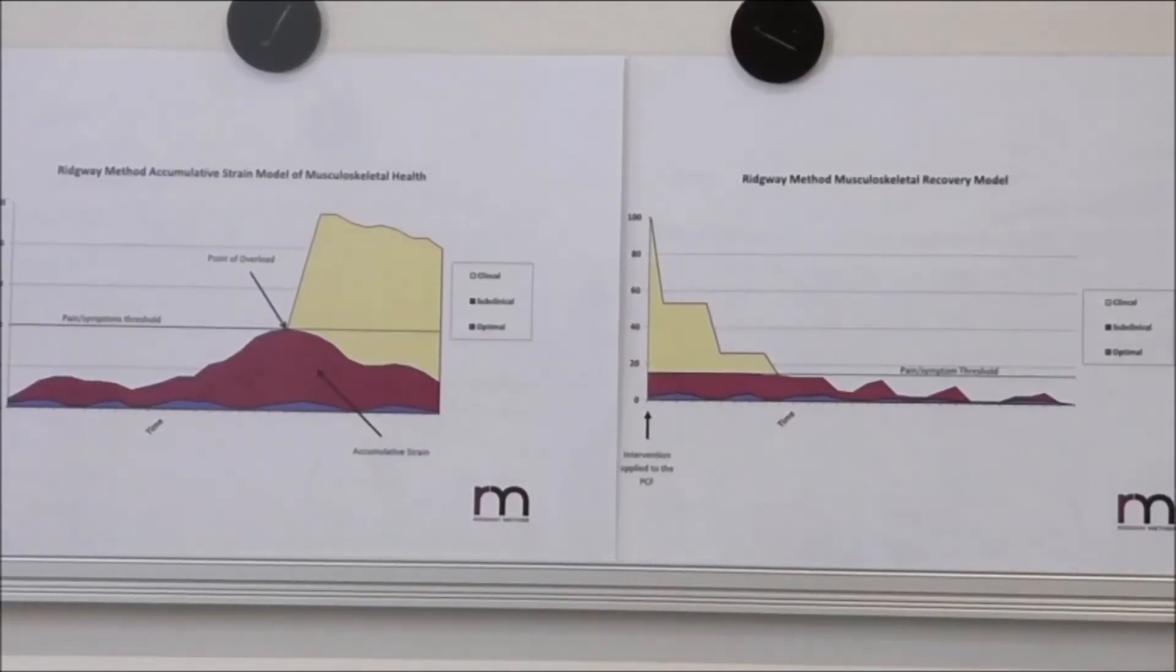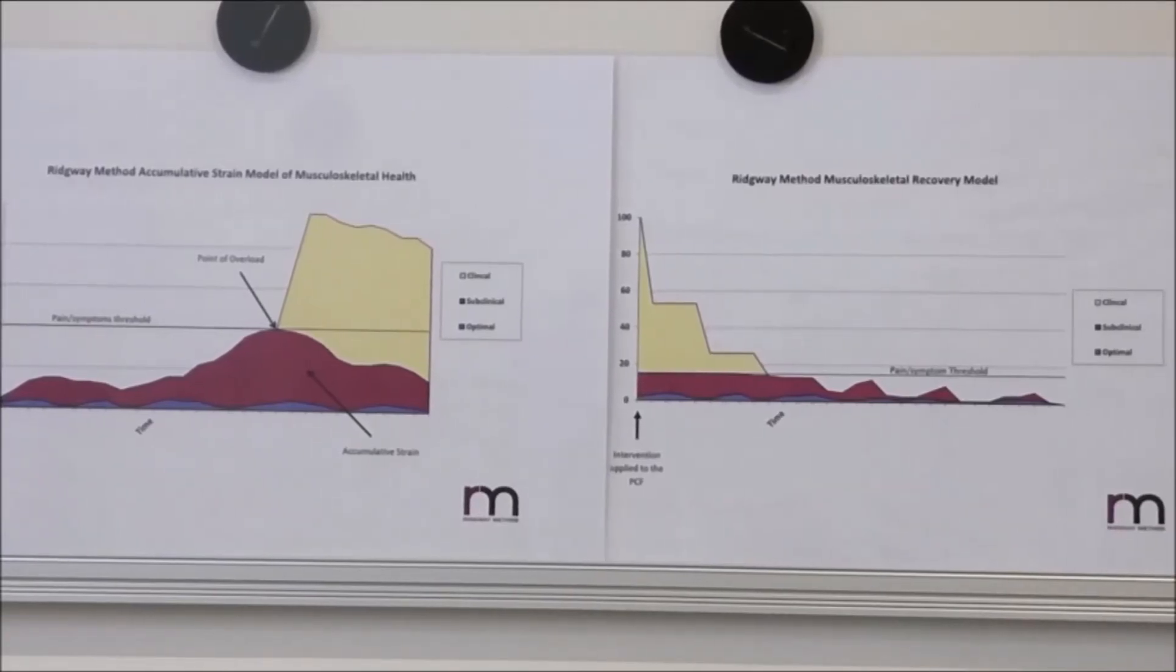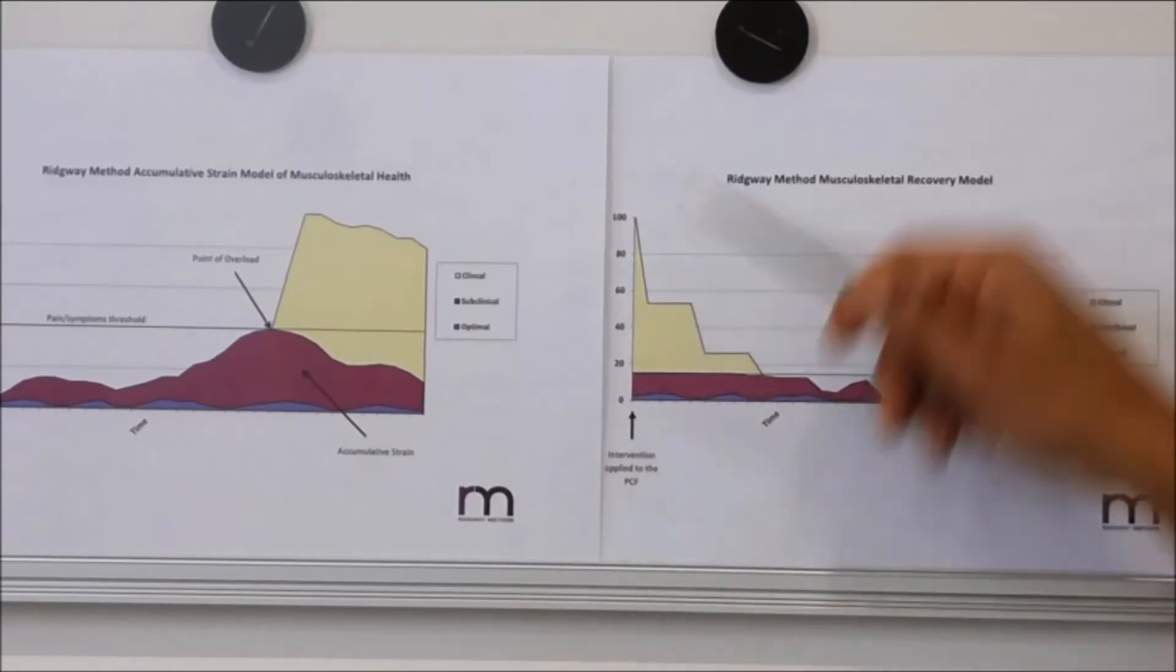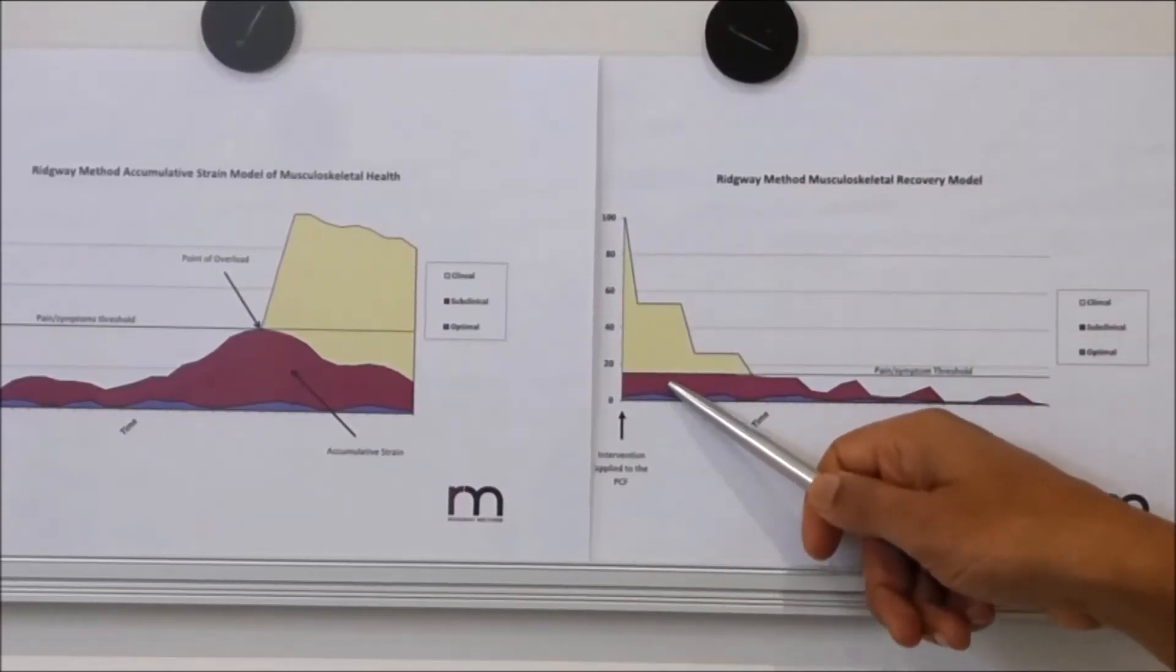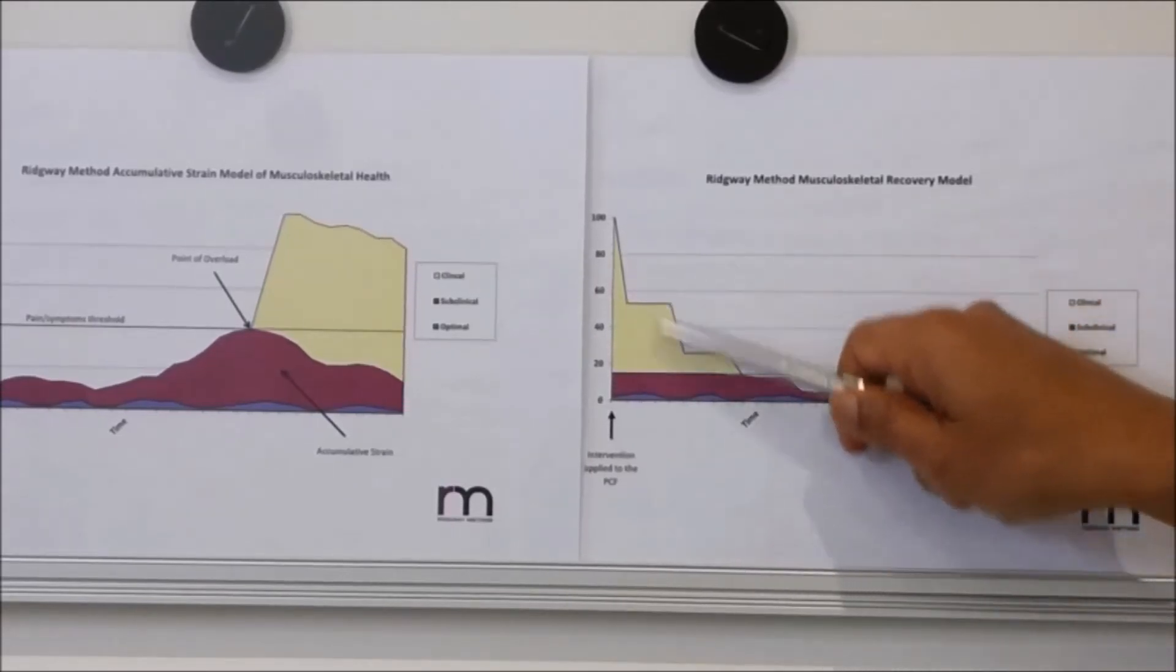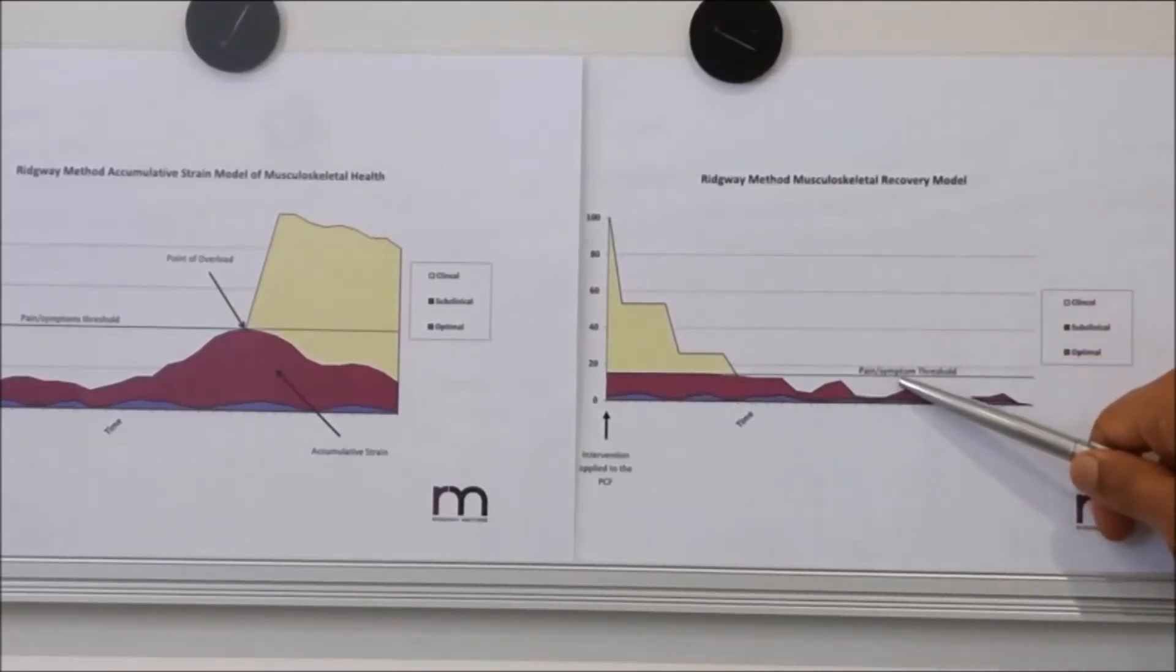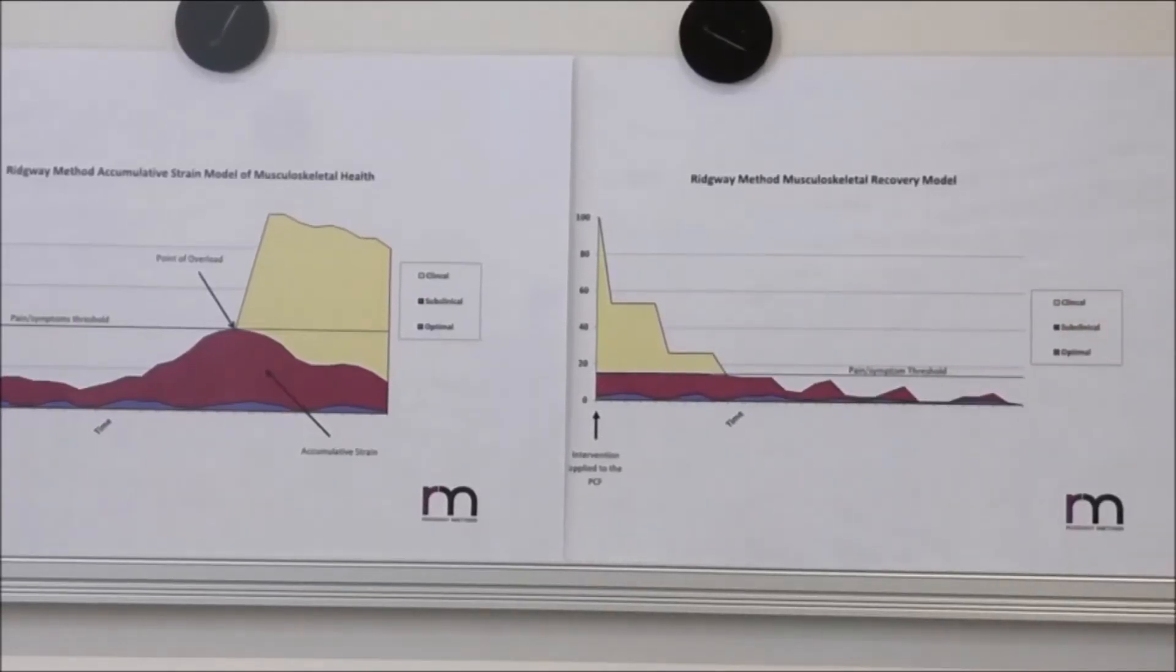Our job then is to find what structure is most at fault—the cause of your symptoms—and treat that. Once we do treat that, the level of strain drops significantly. As the strain drops in your body and drops below this symptom threshold, your pain and symptoms gradually subside.